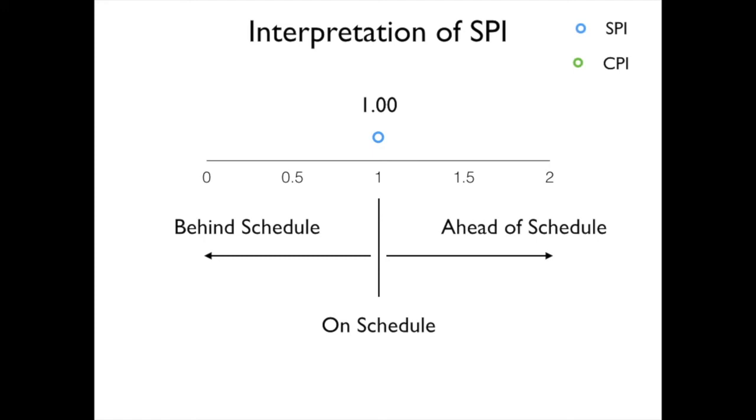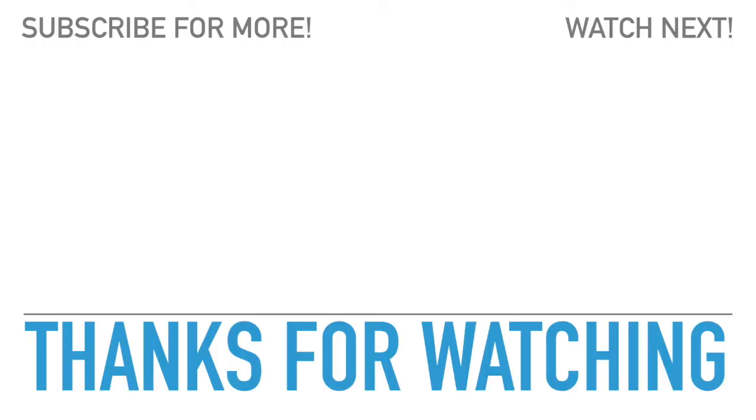However, it can be useful when we particularly have a large number of tasks that are currently in progress. So SPI, once again, should just be used or really considered when we're looking at those activities that are in process or currently being worked on. Hopefully this provides you with a good overview of what SPI can do for us.